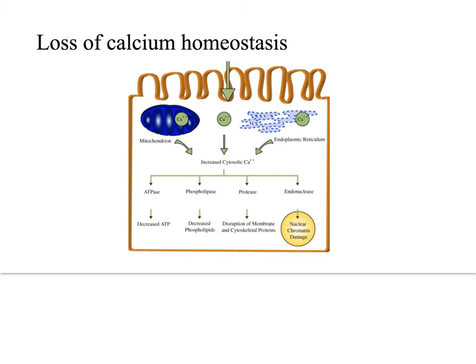Calcium homeostasis is important to maintain cell life. Cytosolic free calcium is kept at concentrations that are at least tenfold lower than the extracellular levels. In the normal cell, most intracellular calcium is sequestered in mitochondria and endoplasmic reticulum. Calcium concentration gradients are maintained by membrane-associated calcium-magnesium-dependent ATPases. Ischemia and some toxins cause early release of calcium into the cytosol.